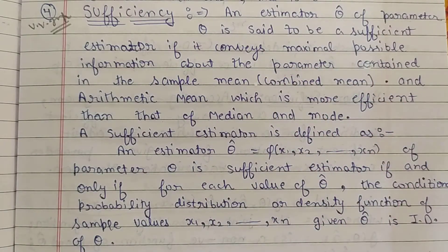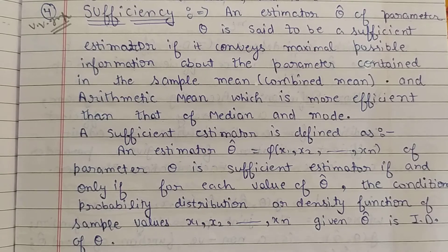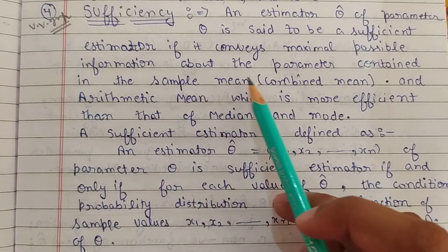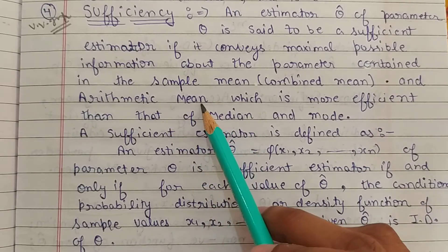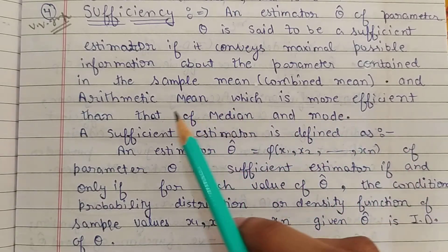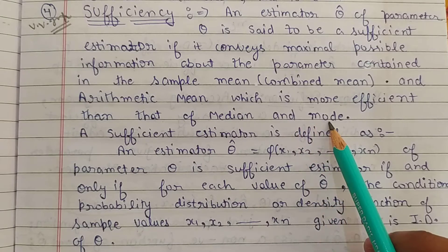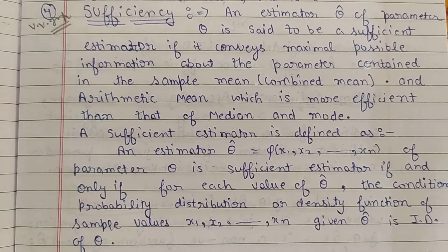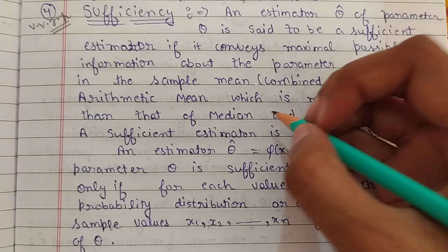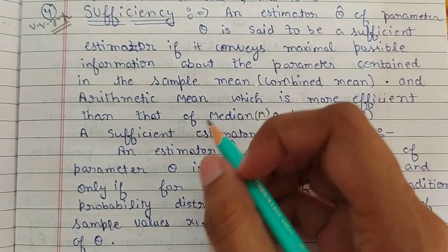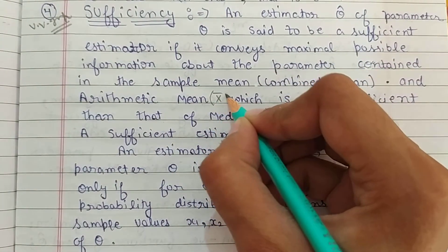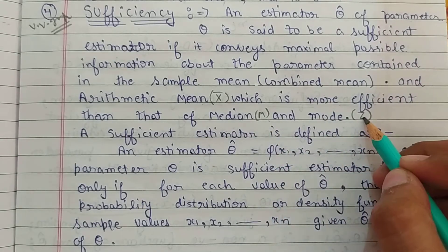The combined arithmetic mean is more efficient than the median and mode. Jo hamara arithmetic mean hai, means ki jo x bar hai, wo more efficient hai median se aur mode se. Means ki median ko m aur mode ko z se denote karte hain. Jo hamara x bar hai, wo median aur mode se more powerful hai.